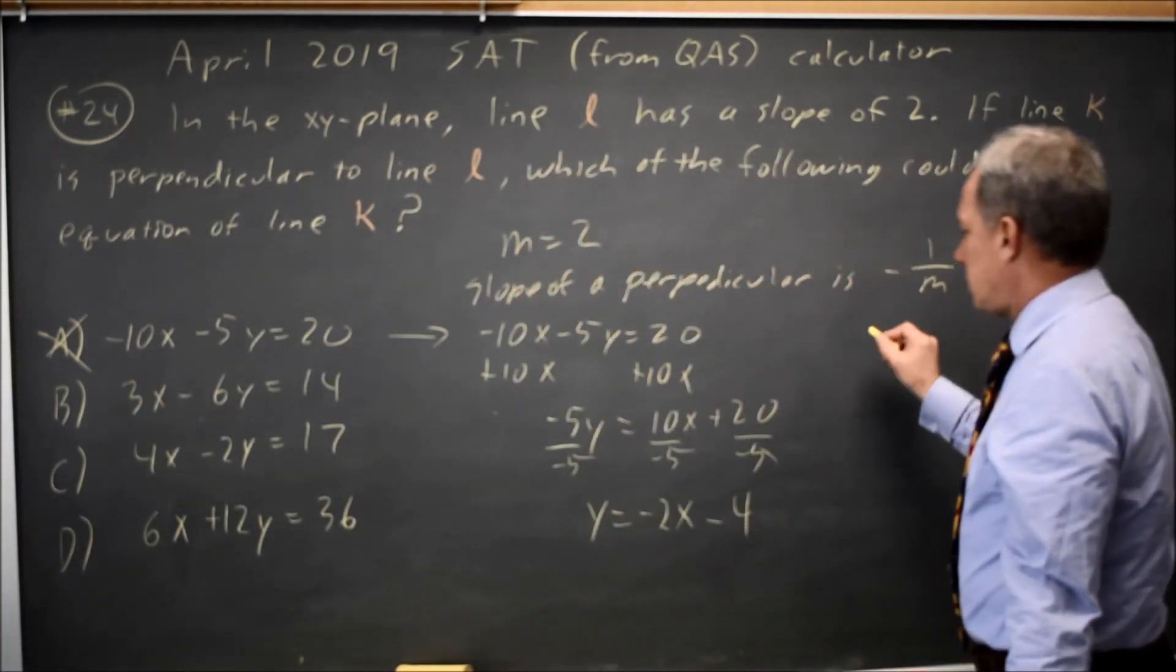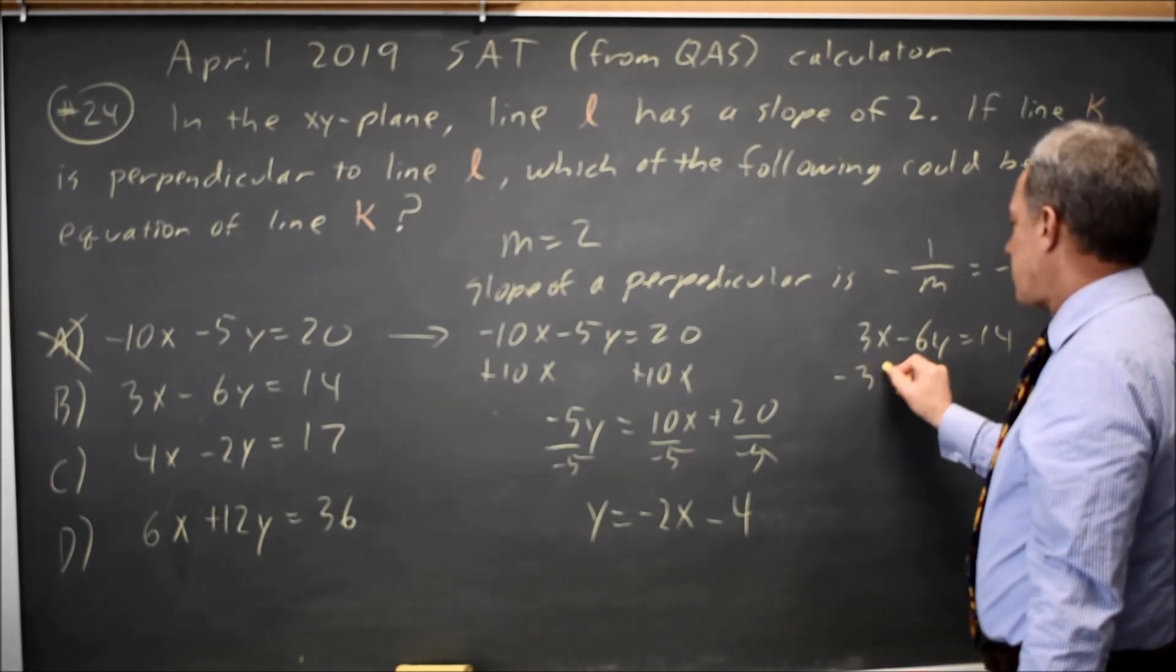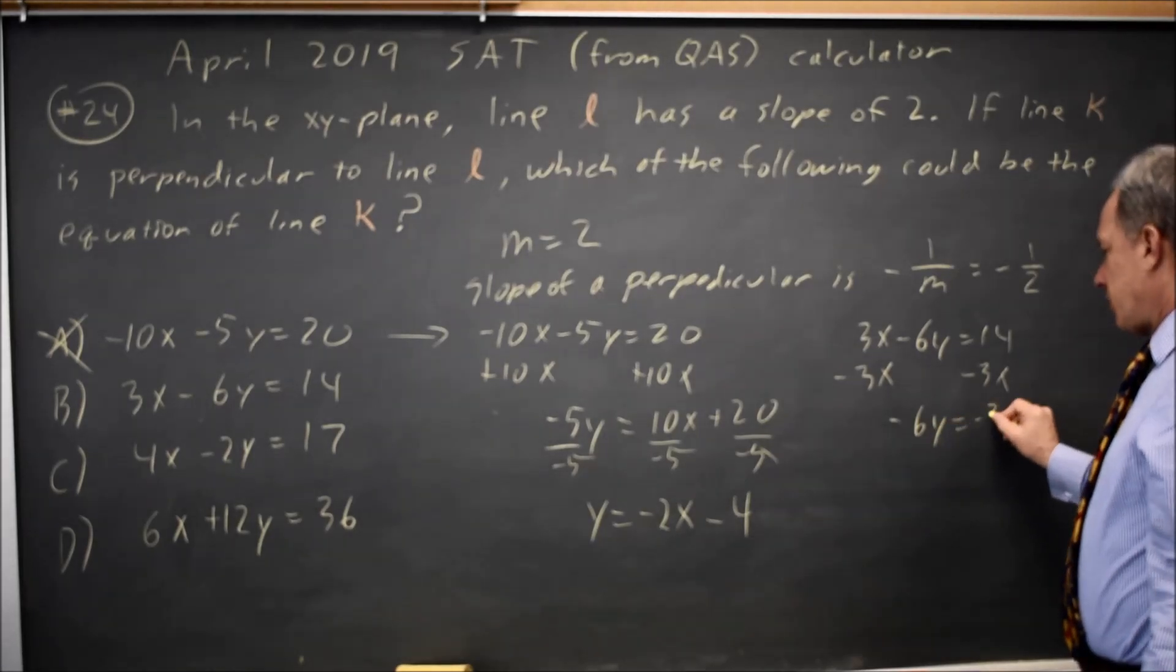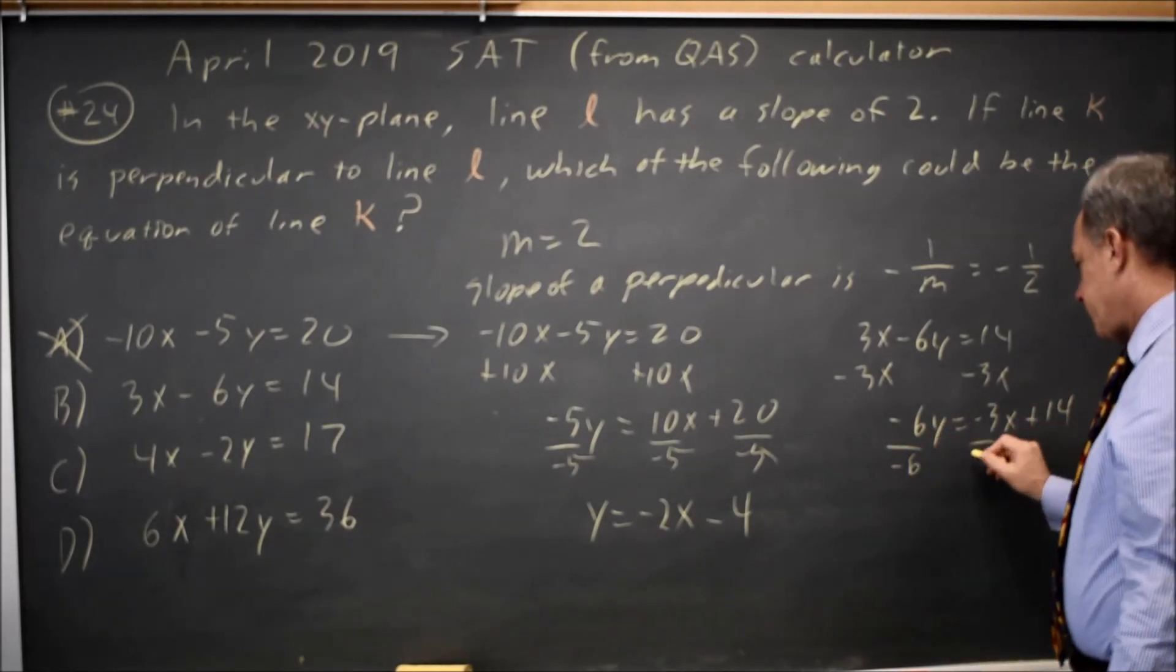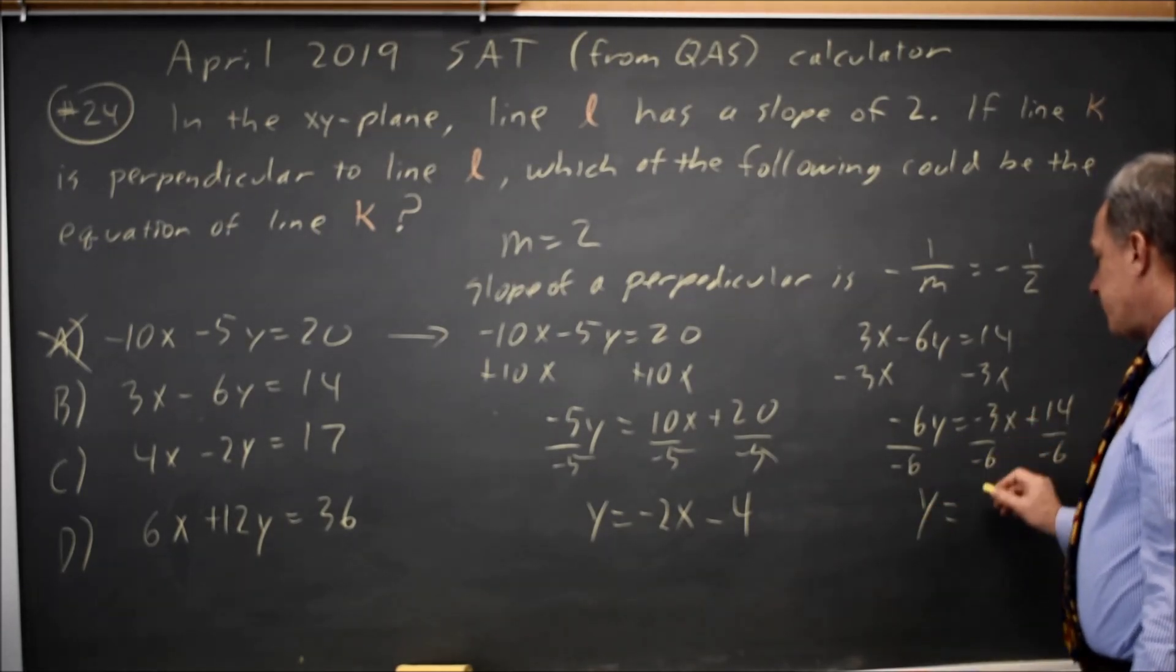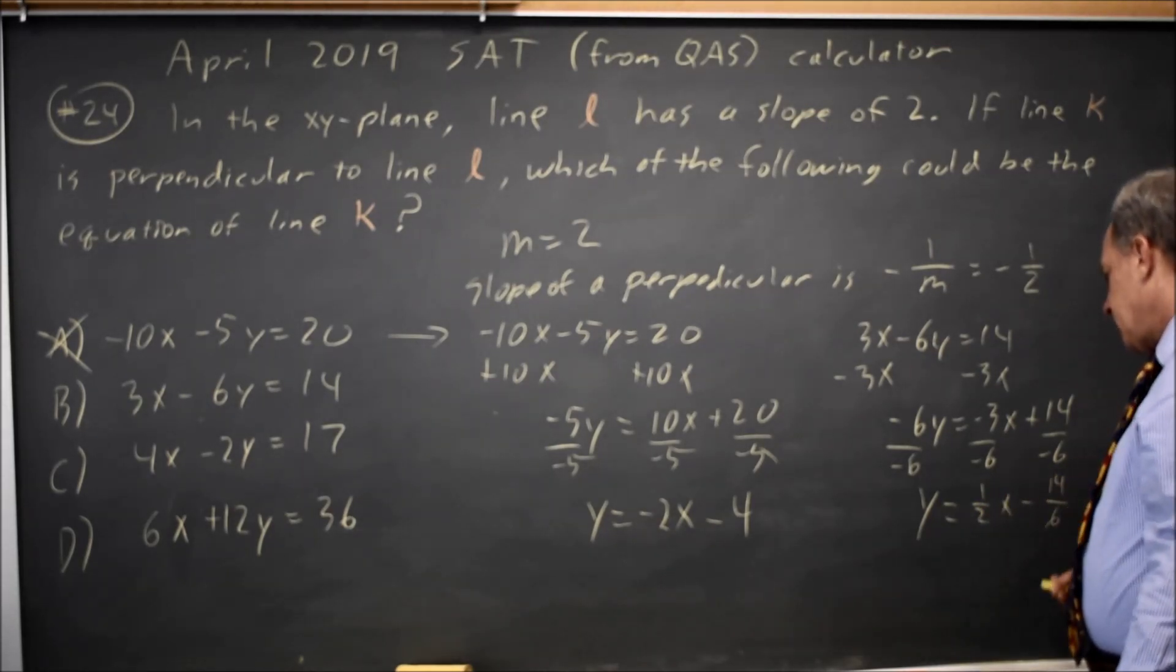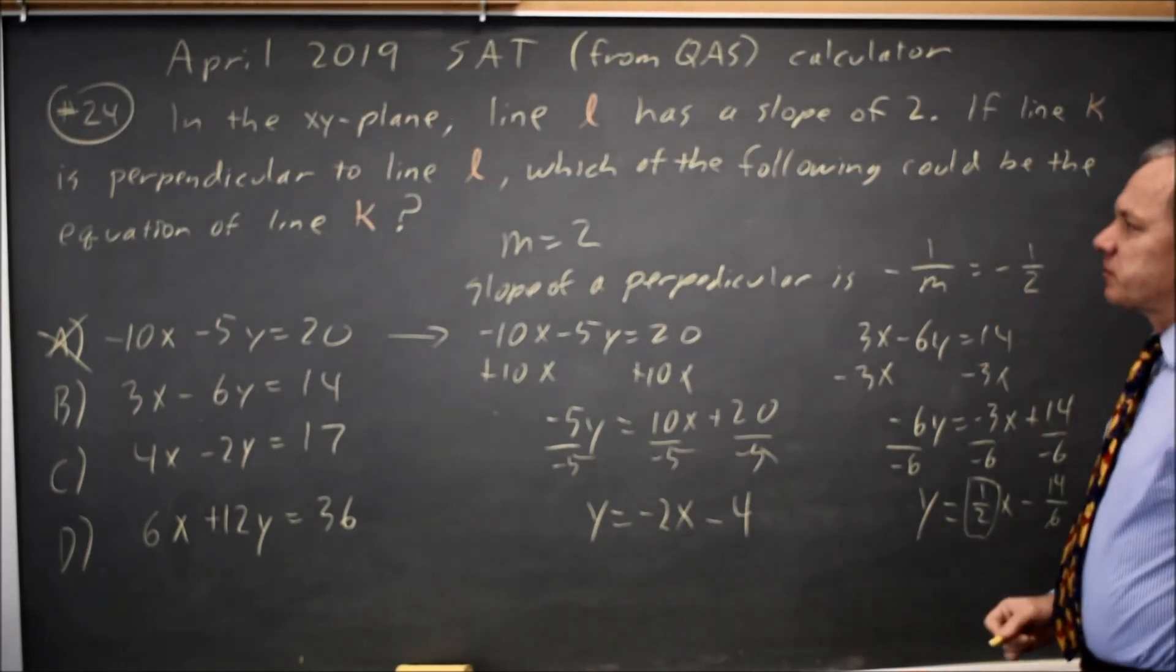What about B? 3x minus 6y equals 14. Subtract 3x from both sides, negative 6y equals negative 3x plus 14. Divide by negative 6, y equals positive 1 half x minus 14 over 6. Slope is positive 1 half. I need negative 1 half to be perpendicular.